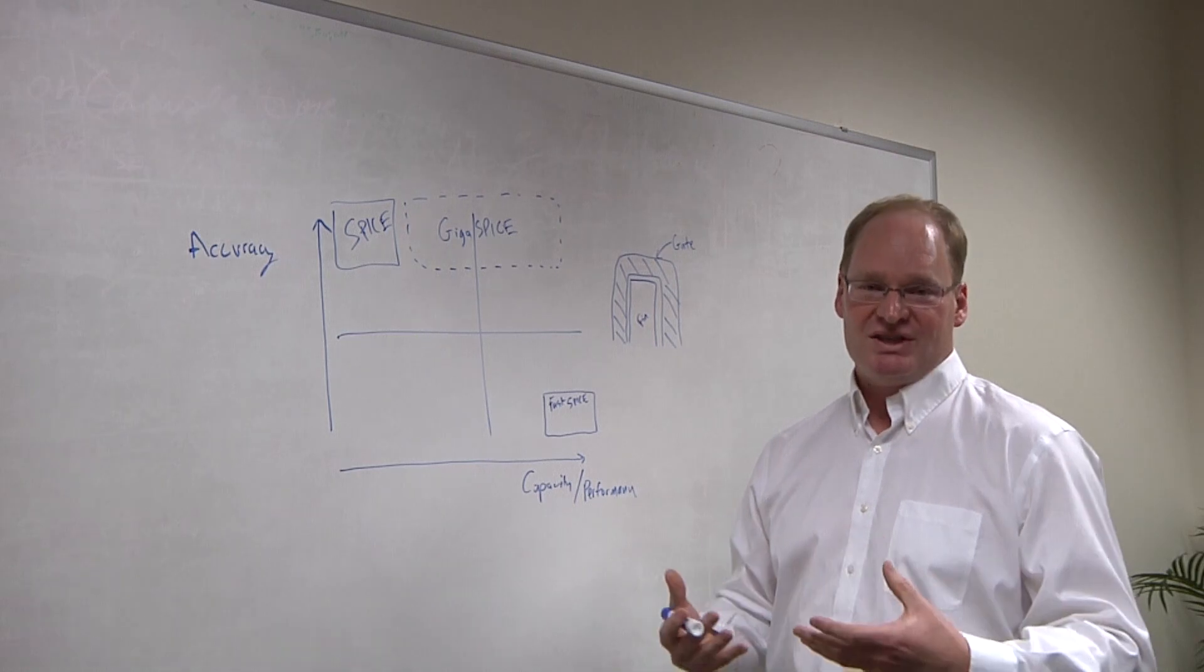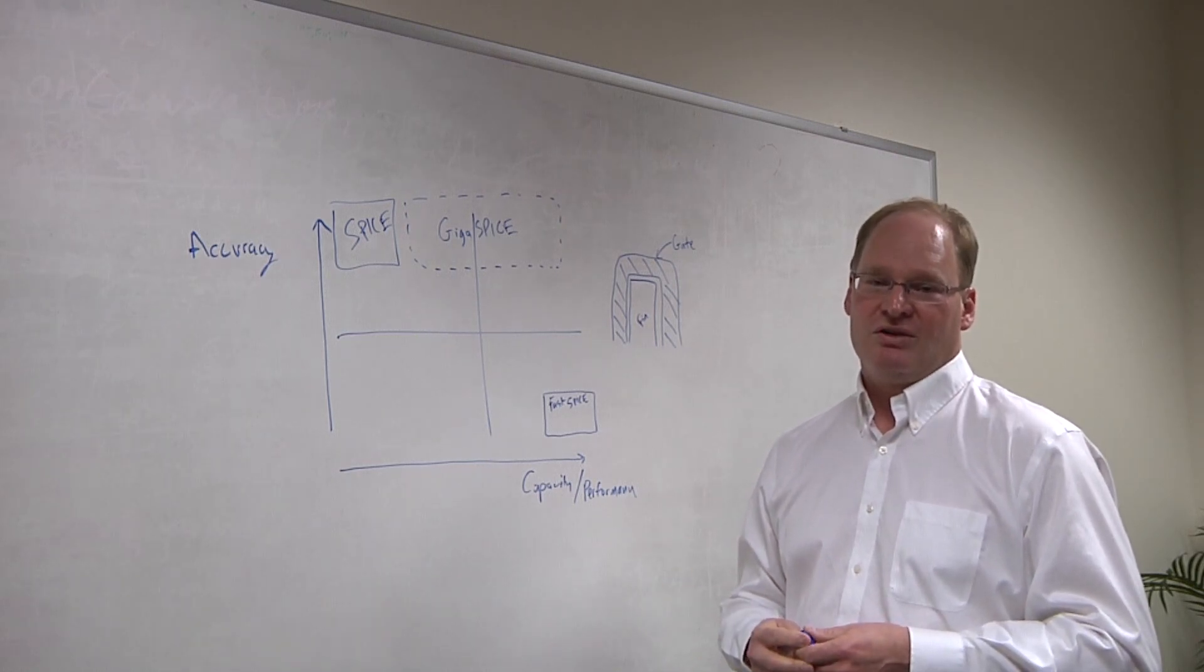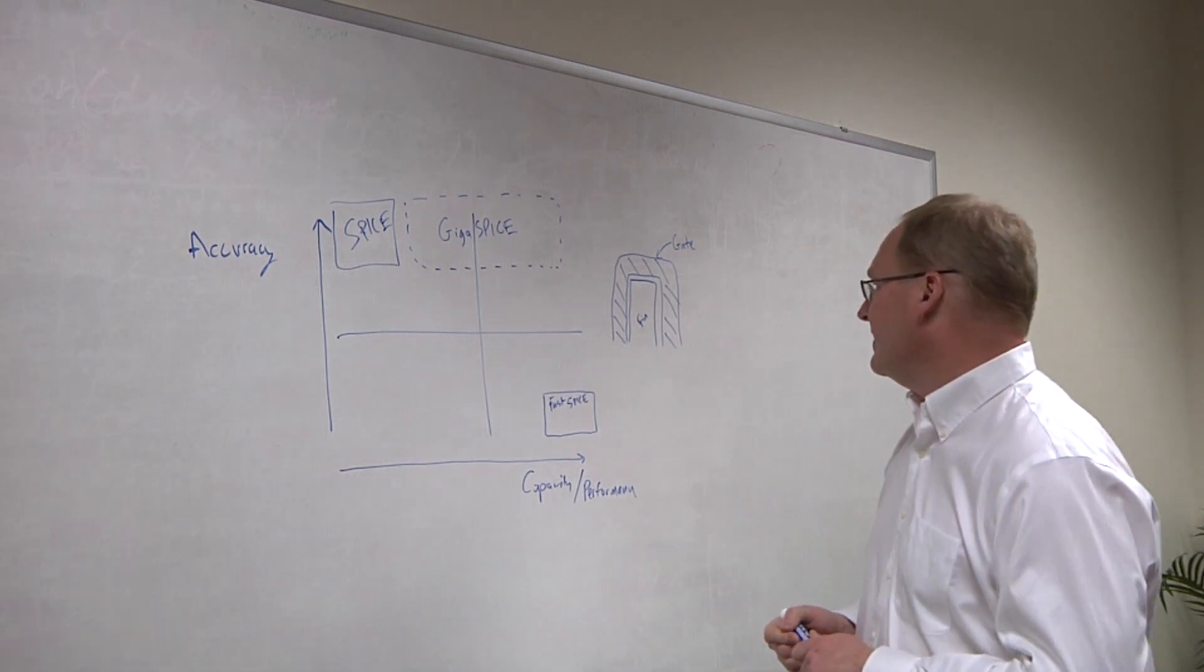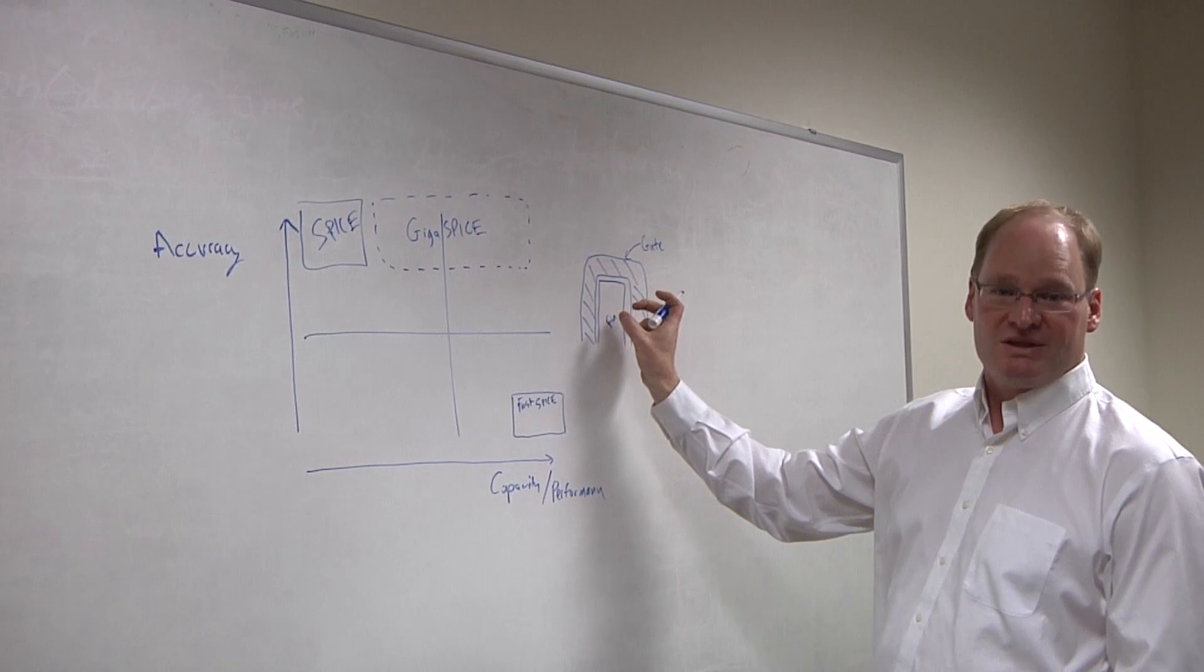detailed currents, leakages are really important. Furthermore, parasitics are growing. And if you look at the FinFET device, so you have a gate wrapped around a fin, which is the channel.